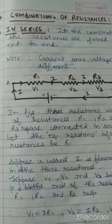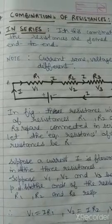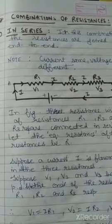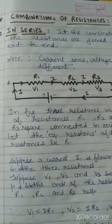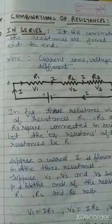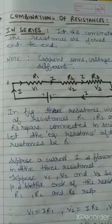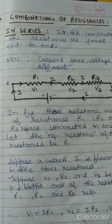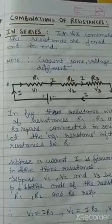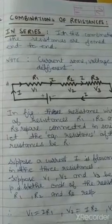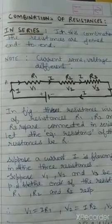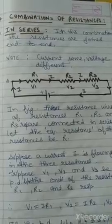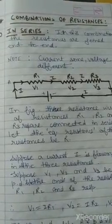Hello everyone. Today we will discuss the topic combinations of resistances. Resistances are combined in two ways: series combination and parallel combination. There is a mixed combination also, that is the combination of series and parallel. But basically there are two — series combination and parallel combination.